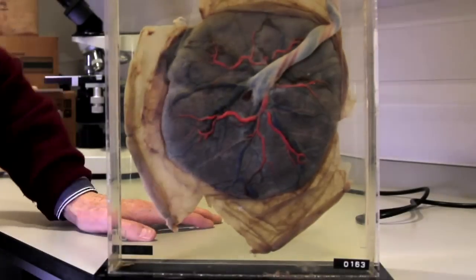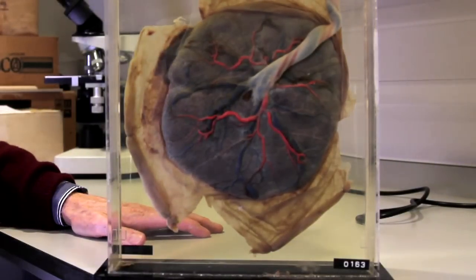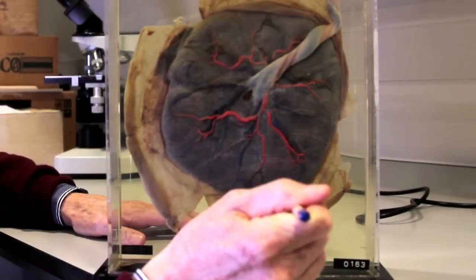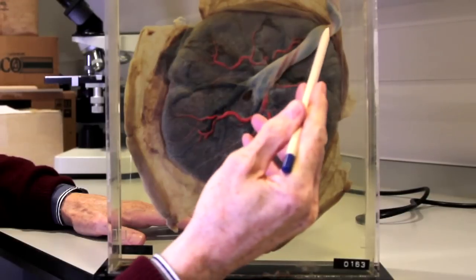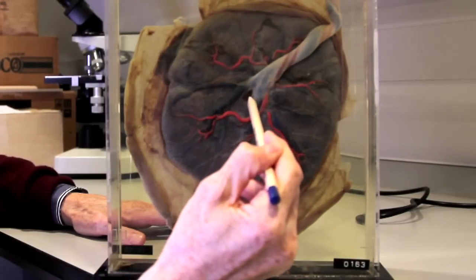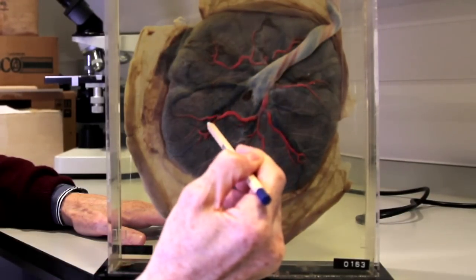This is a placenta that was preserved after a normal delivery. This surface faced the baby with the umbilical cord attaching near the centre and the blood vessels that connected to the baby radiating outwards. The other surface was in contact with the wall of the uterus and penetrated by the arteries coming from the mother.